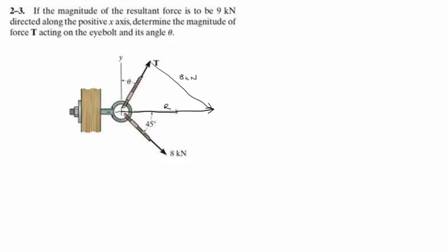So the easiest way to do this would be the law of sines. Or you can also add the x and y components, but let's make it interesting. You know this is the 8 kN force. The force R is directed along the x-axis and it is 9 kN. All we need to find is this.